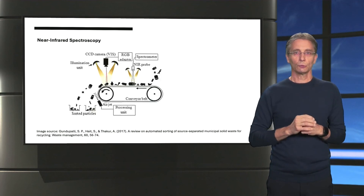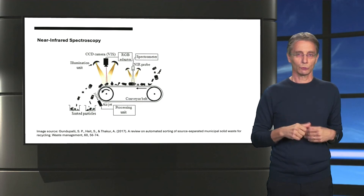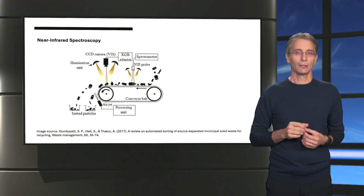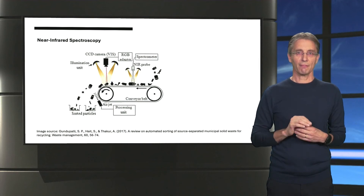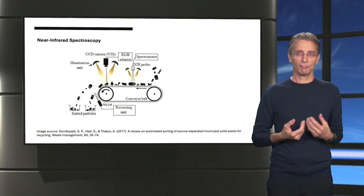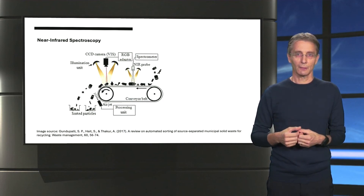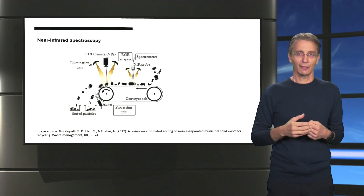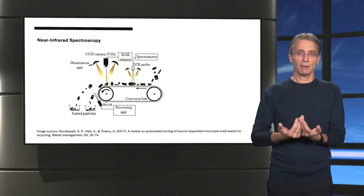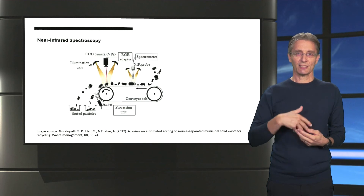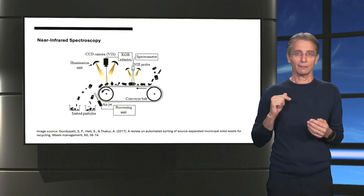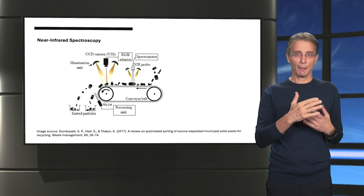There are also technologies that use optical instrumentation to sort streams of mixed polymer particles. A commonly used method is near-infrared spectroscopy. It is a relatively fast method that doesn't require surface treatment of the particles. It is based on differences in absorption of near-infrared light by different polymers. After the plastic particles are illuminated, a near-infrared sensor detects the reflected wavelengths. With this information, a processor unit determines the polymer type and sends a signal to an air jet, which blows the different polymers into separate containers.